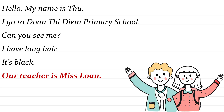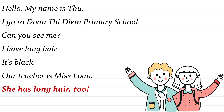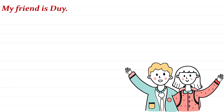Our teacher is Miss Lawn. Our teacher is Miss Lawn. She has long hair too. She has long hair too. My friend is Dewey. My friend is Dewey.